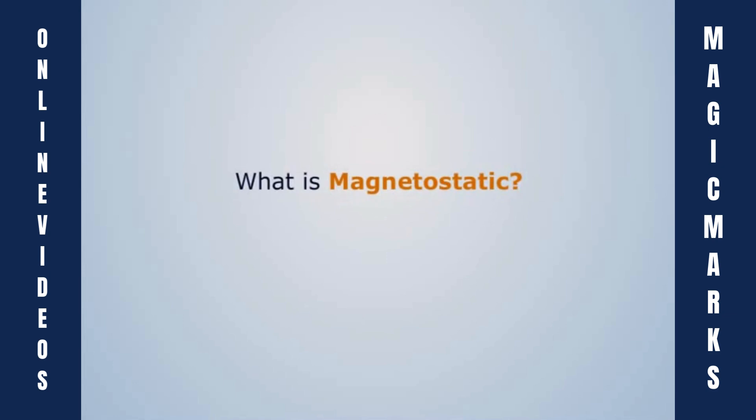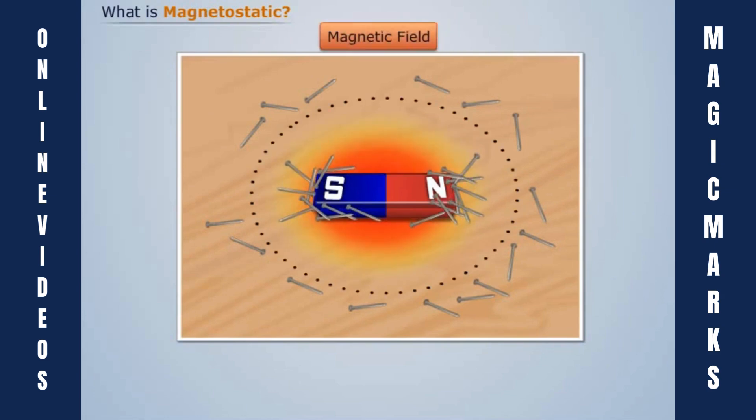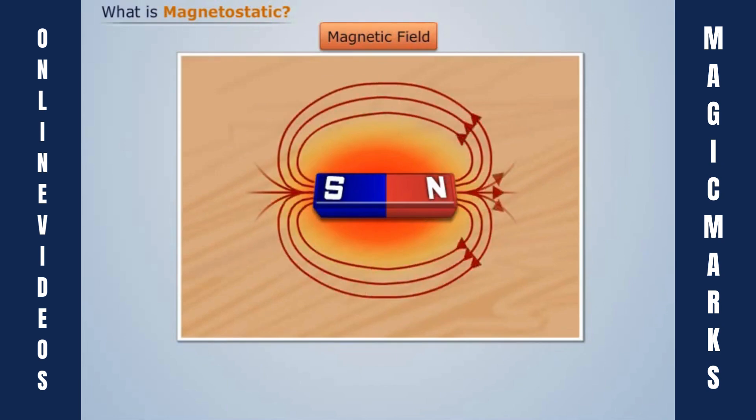What is magnetostatic? Consider a bar magnet and place some iron nails near it. We see that the nails nearer to the magnet get attracted towards the magnet. The region where the influence of magnet exists is called the magnetic field. This magnetic field can be represented by lines coming out from the north pole and entering into the south pole.